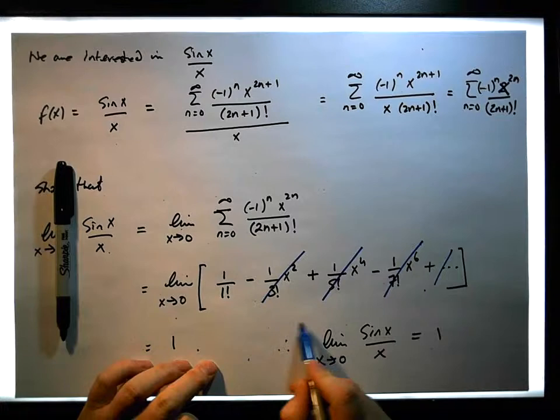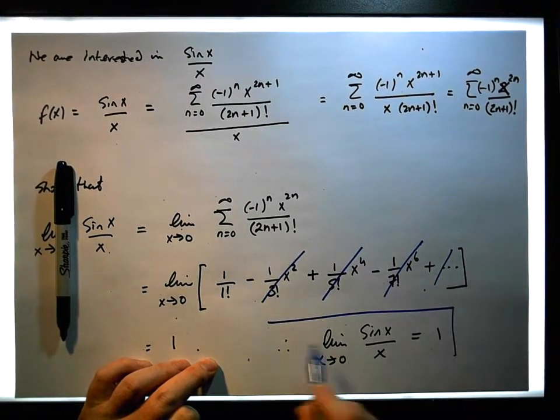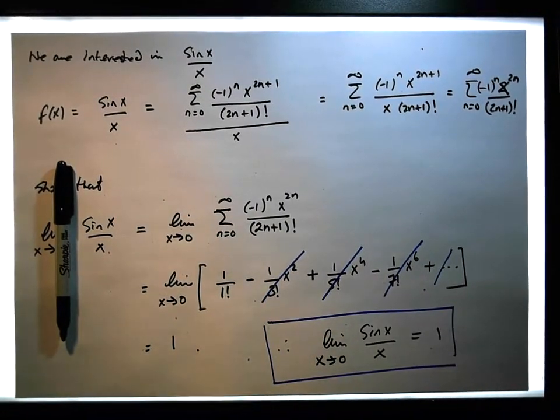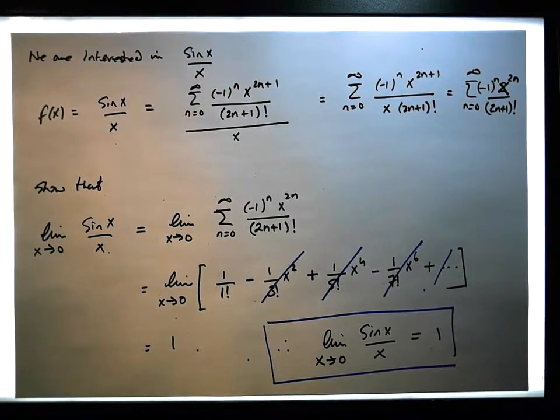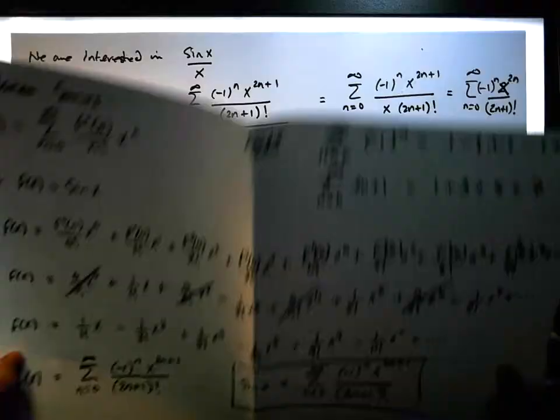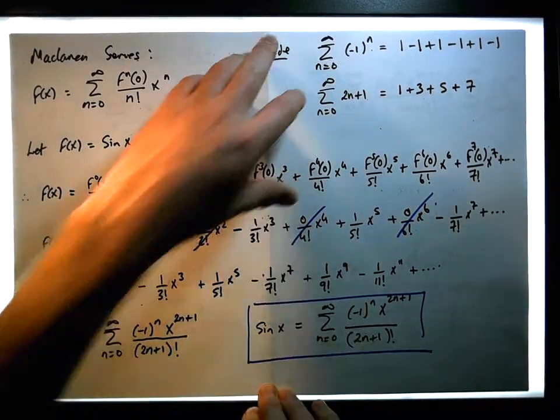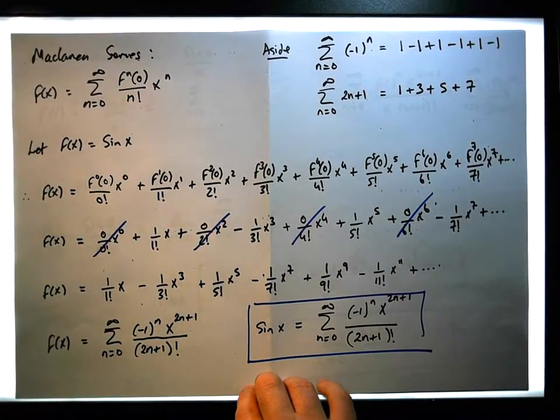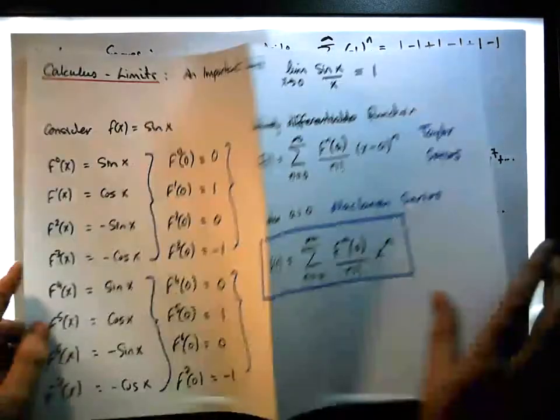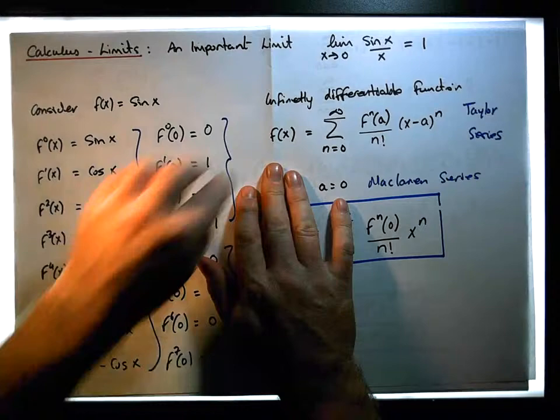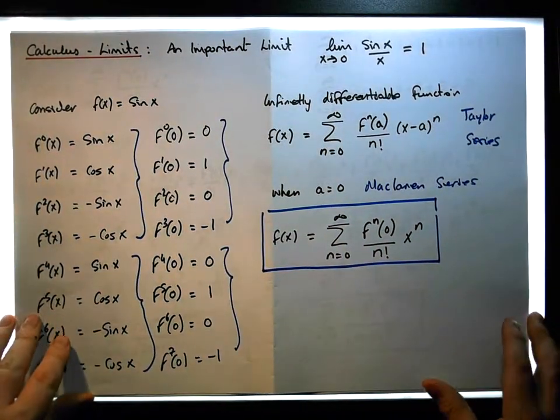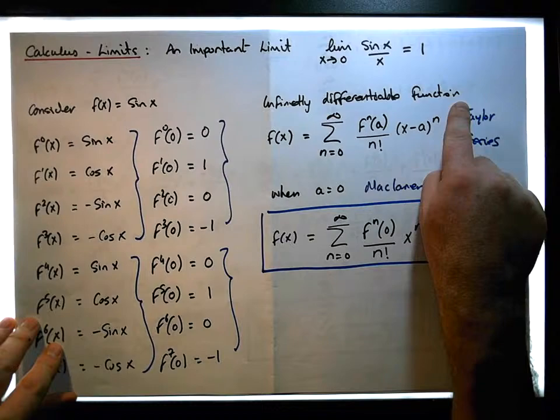And I think this is actually a nicer proof of that particular important limit that comes up in a lot of places in relation to calculation of limits and so on. As you can see, there probably wasn't really much work to do here other than being aware of this particular infinite expansion. This is what's known as the Taylor series.